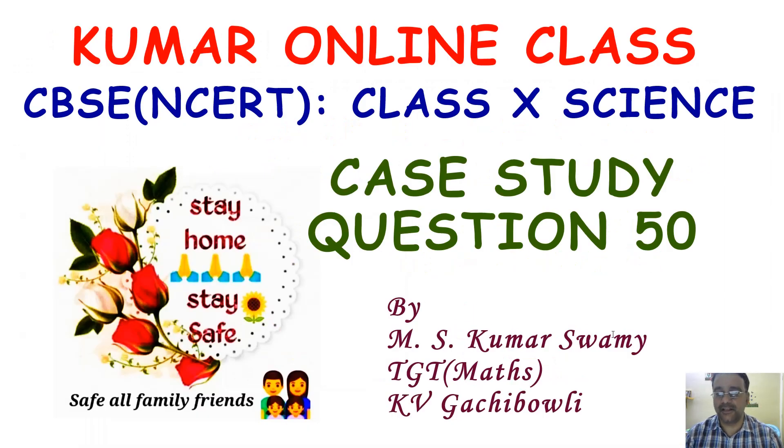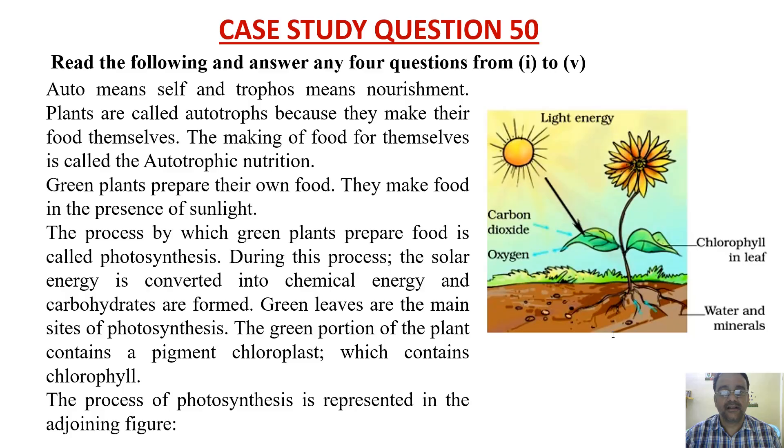Now we are going to start case study question number 50 of class 10th science. Auto means self and trophos means nourishment. Plants are called autotrophs because they make their food themselves, and the making of food for themselves is called autotrophic nutrition.